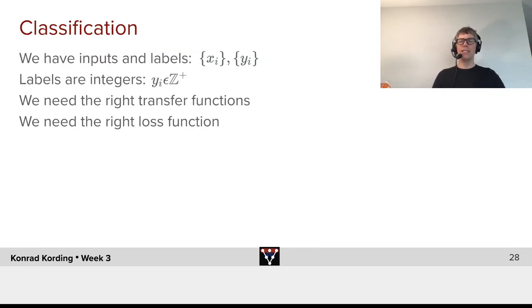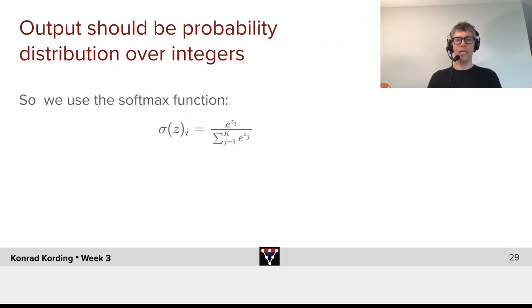So let's dive right into classification. What is classification? We have inputs and labels, xi and yi. And in the case of classification, the yi happen to be integers. Now, what do we need? We need the right transfer function and we need the right loss function.